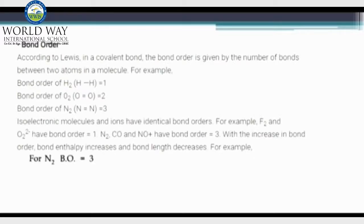Bond order. According to Lewis, while forming covalent bond, bond order is given by the formula: the number of bonds present between the two atoms participating to form a molecule. For example, a single bond exists while the formation of hydrogen molecule takes place.